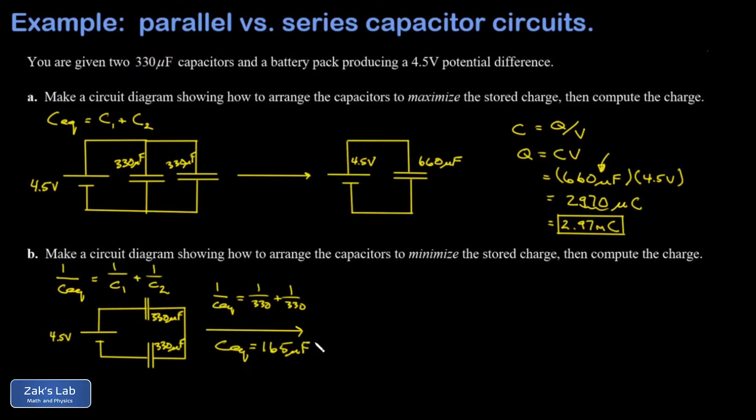In other words, one half the value of either one of the individual capacitors. Now we do basically the same thing we did before. I'm going to write down that q equals CV in order to compute the charge stored on this equivalent capacitance. My equivalent capacitance was 165 microfarads, my potential difference is 4.5 volts.